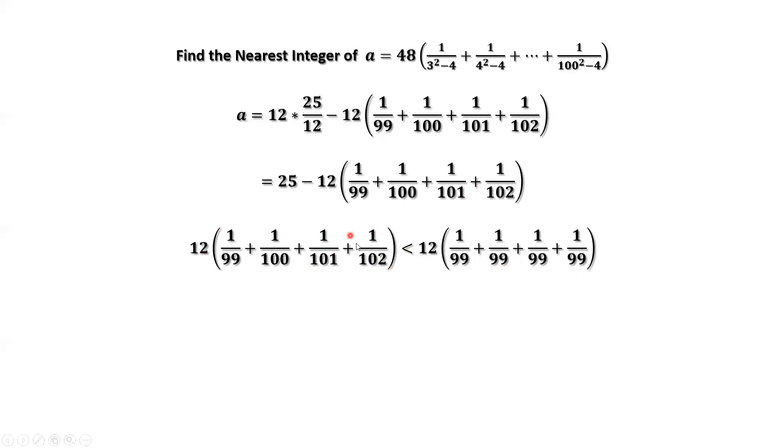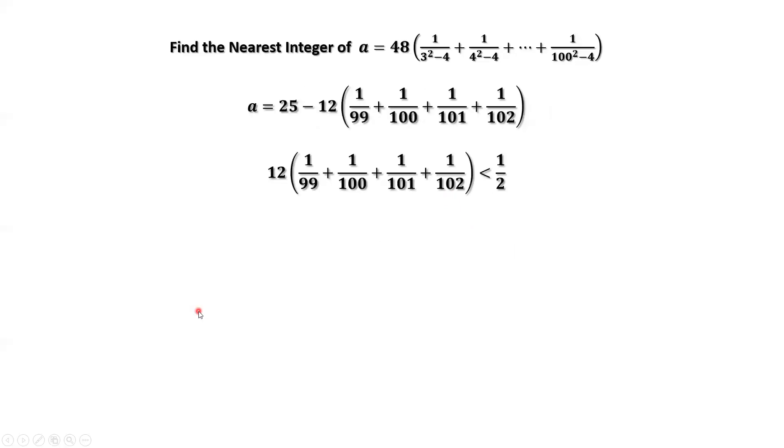Therefore, the left-hand side is less than 12 times the sum of 4 times 1 over 99. Simplify the right-hand side, which is 12 times 4 over 99 equals 48 over 99. This number is less than 1 half. Therefore, we have this number is less than 1 half.